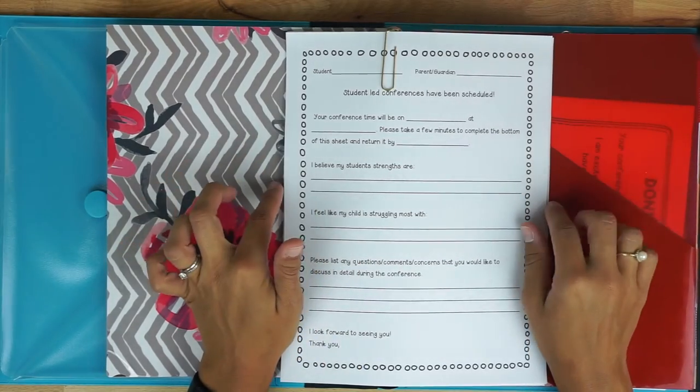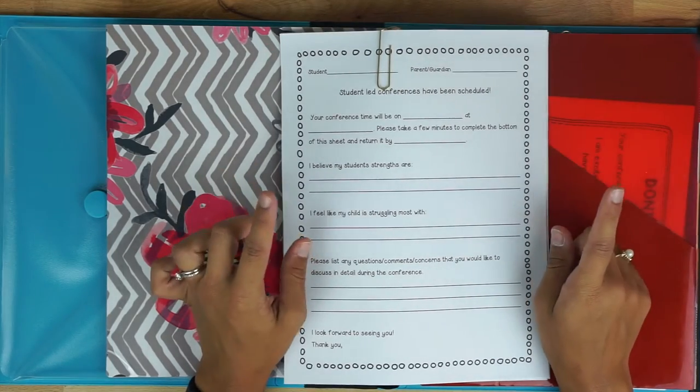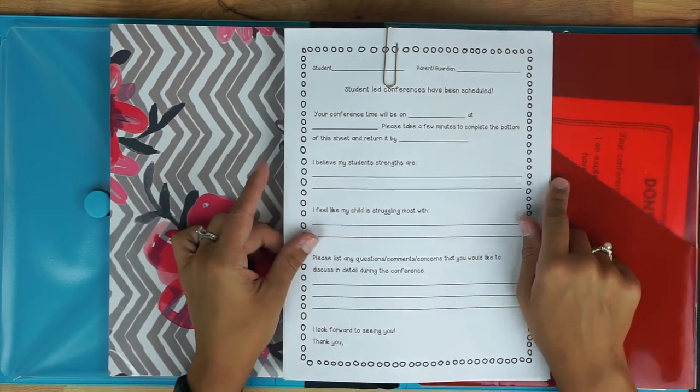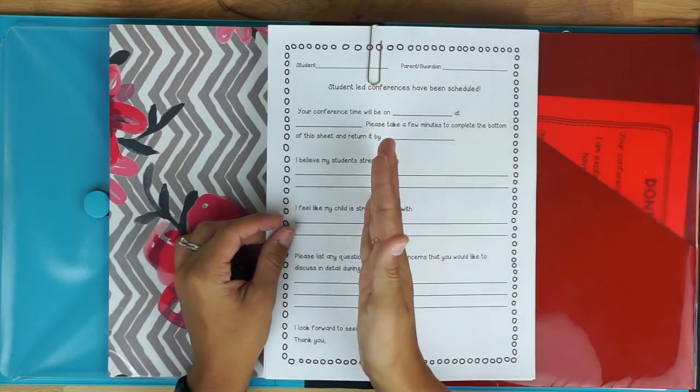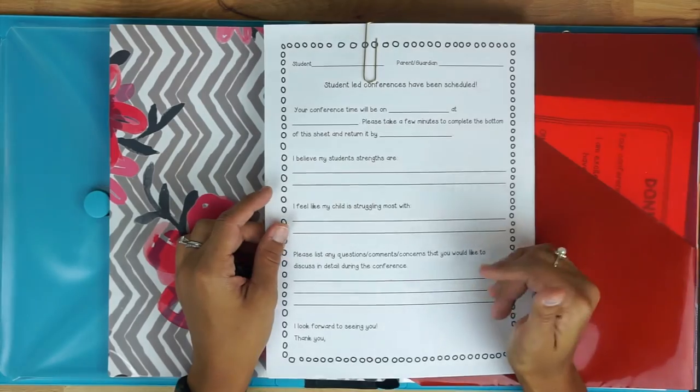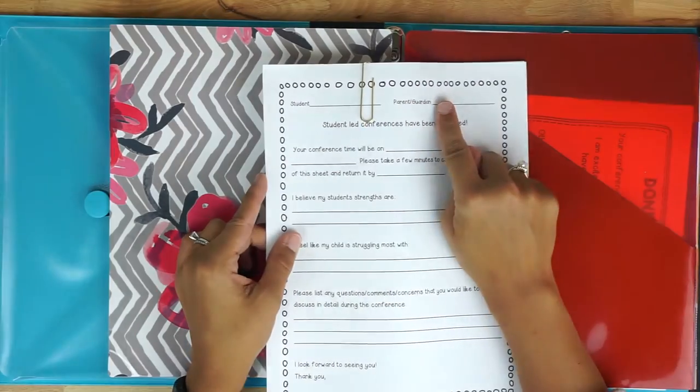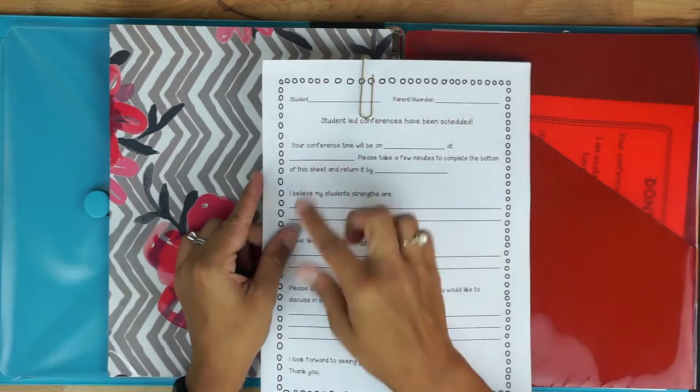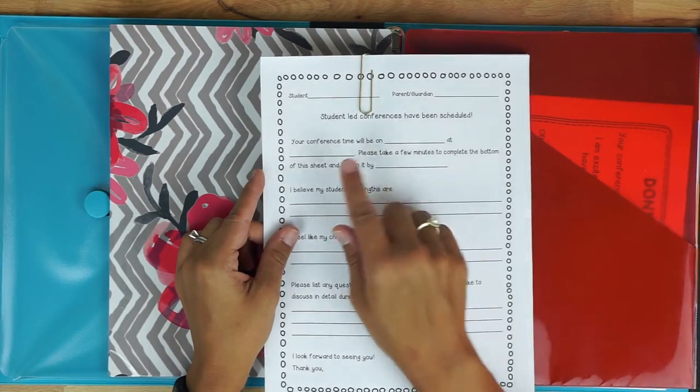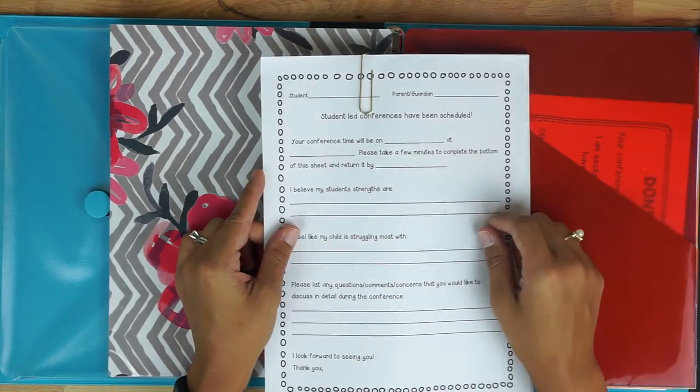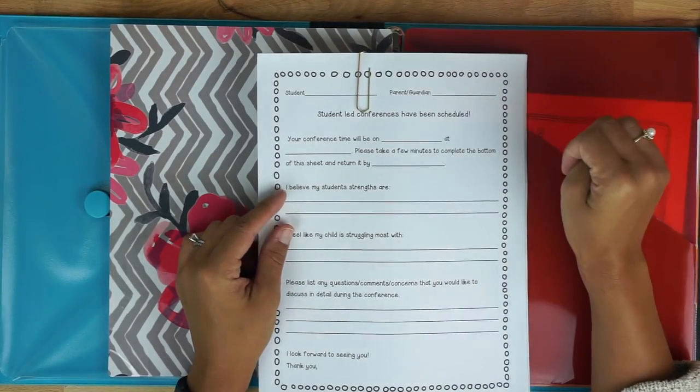So this year I'm actually going to be doing things just a little bit different I'm really excited about it and I will let you guys know how it's going but I'm going to be doing student-led conferences. So I created this one which still was the exact same as my last one it just has a different title and some of the wording is just a little different. So I'll write the student and I'll write the parents name up here and then I will have this filled out for the top and it says your conference time will be on blank at blank please take a few minutes to complete the bottom of the sheet and return it by blank.